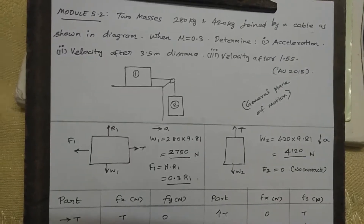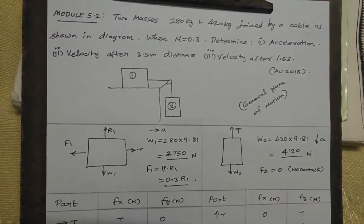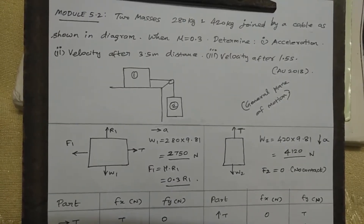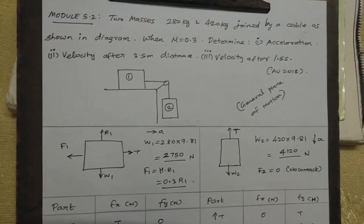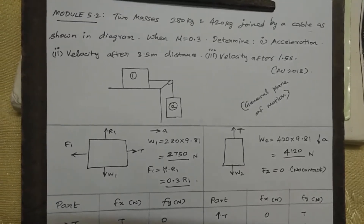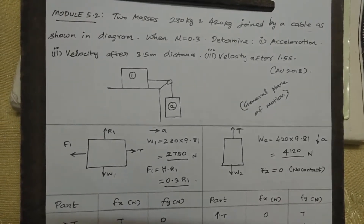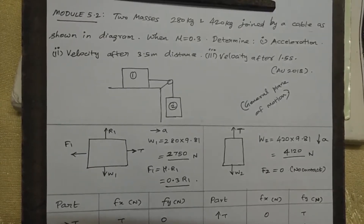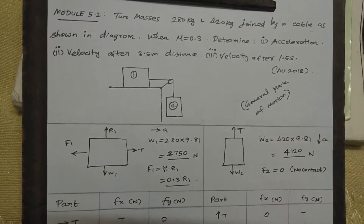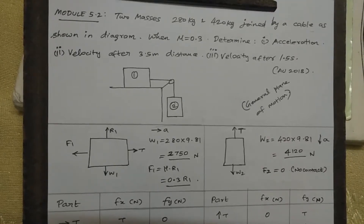This is our model number 5.2. Two masses, 280 kg and 420 kg, are joined by a cable as shown in the diagram. With friction, when the coefficient of friction is 0.3, determine: number one, acceleration; number two, velocity after 3.5 meters distance; and number three, velocity after 1.5 seconds. This is the question.